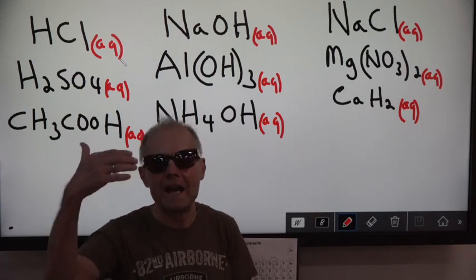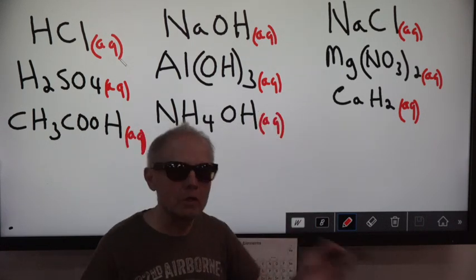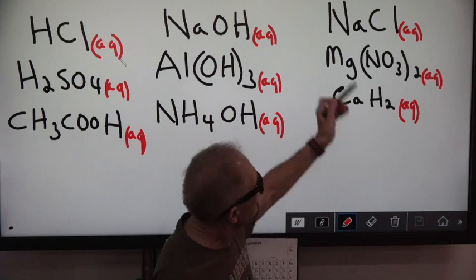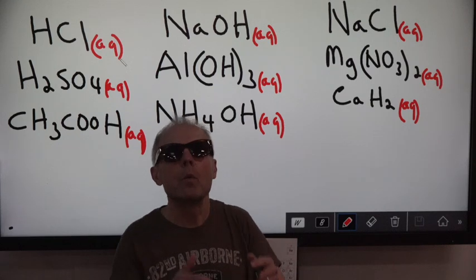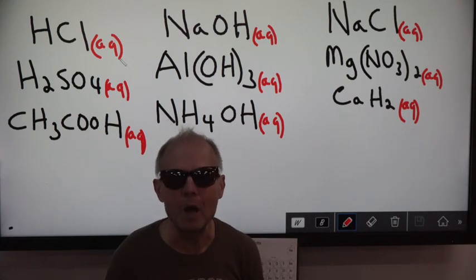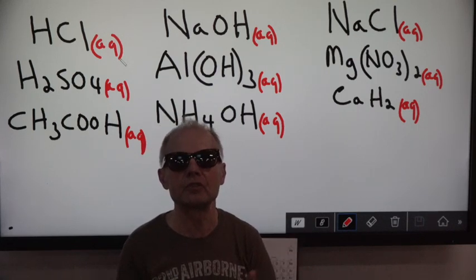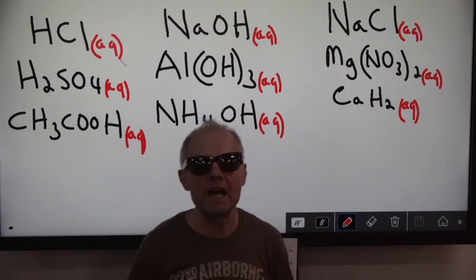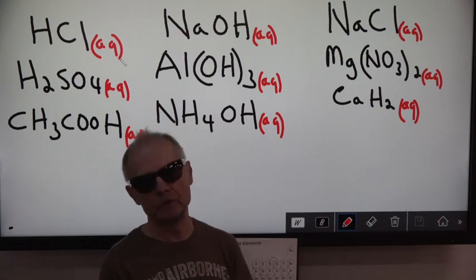How can you tell a salt? They've got a metal hooked to something else. Solid salts don't conduct electricity because they don't have any free ions. But there are three types of salts, and what water does to most salts is it breaks them up into ions. That's dissociation — when water breaks up an ionic compound into ions, it conducts electricity; it's an electrolyte solution.